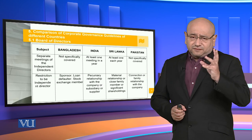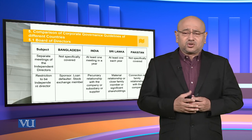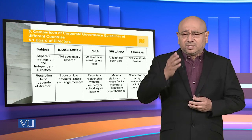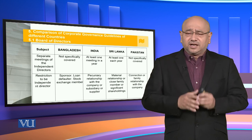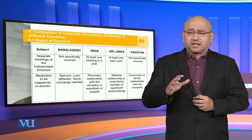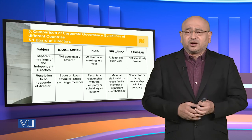Going on to the final comparison regarding the board of directors: separate meetings of the independent directors. In Bangladesh, it is not specifically covered. In India, at least one meeting in a year. In Sri Lanka, also one a year. And in Pakistan, it's not specifically covered. Regarding restrictions to be an independent director: in Bangladesh, a sponsor, loan defaulter, or stock exchange member cannot become a member. In India, a pecuniary relationship with the company or subsidiary or supplier would be a conflict of interest. In Sri Lanka, a material relationship, close family member, or significant shareholdings would disqualify them. And in Pakistan, any connection with the family or any relationship with the company means they cannot become independent directors.